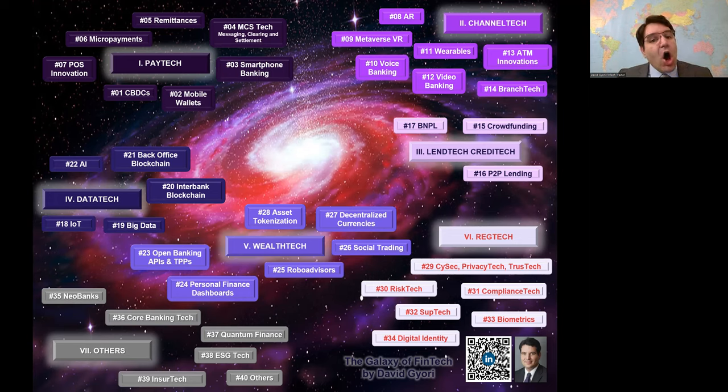For example, Nubank from Brazil, or Starling from the United Kingdom, or WeBank from China. And this is a very interesting process. These neobanks, these challenger banks, are much more flexible, much more nimble, much more up-to-date than traditional incumbent players. Why? Well, let's look at planet number 36. Core banking.